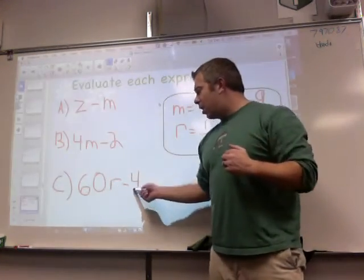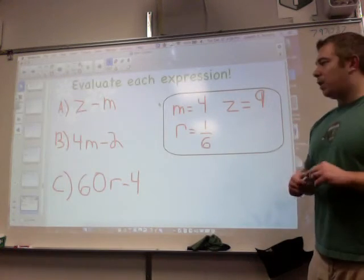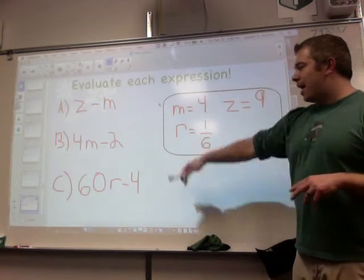And finally 60R minus 4. Here's your key to do all of that. M will equal 4 in any situation.